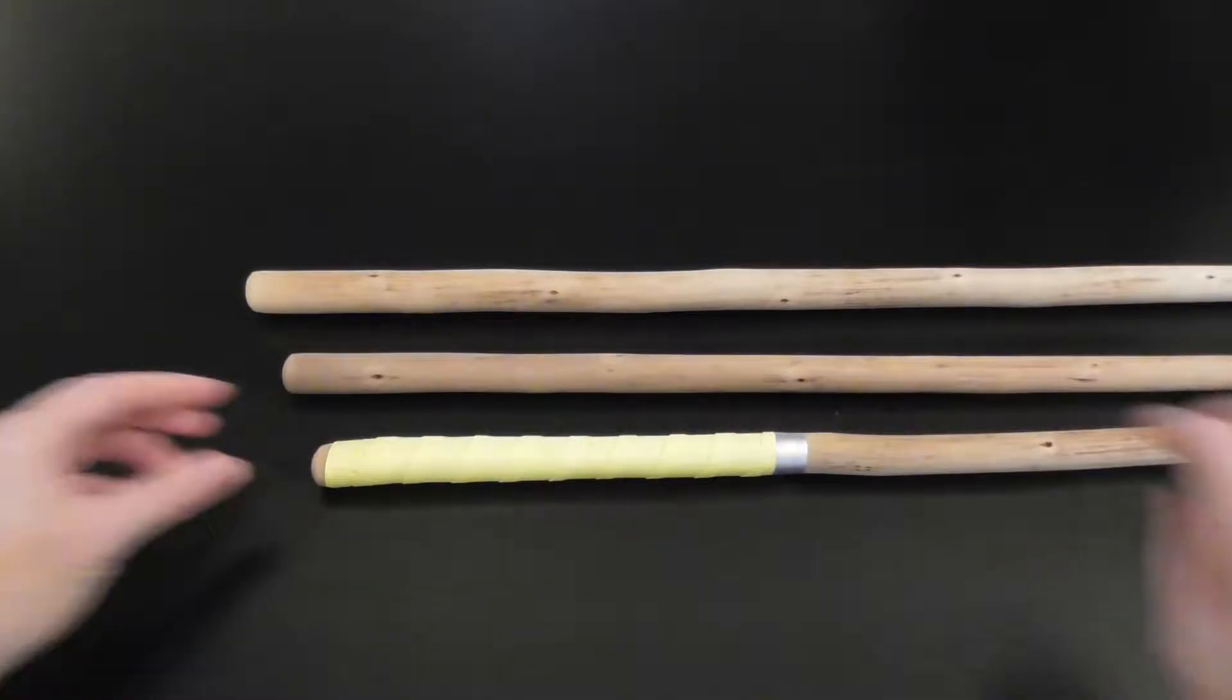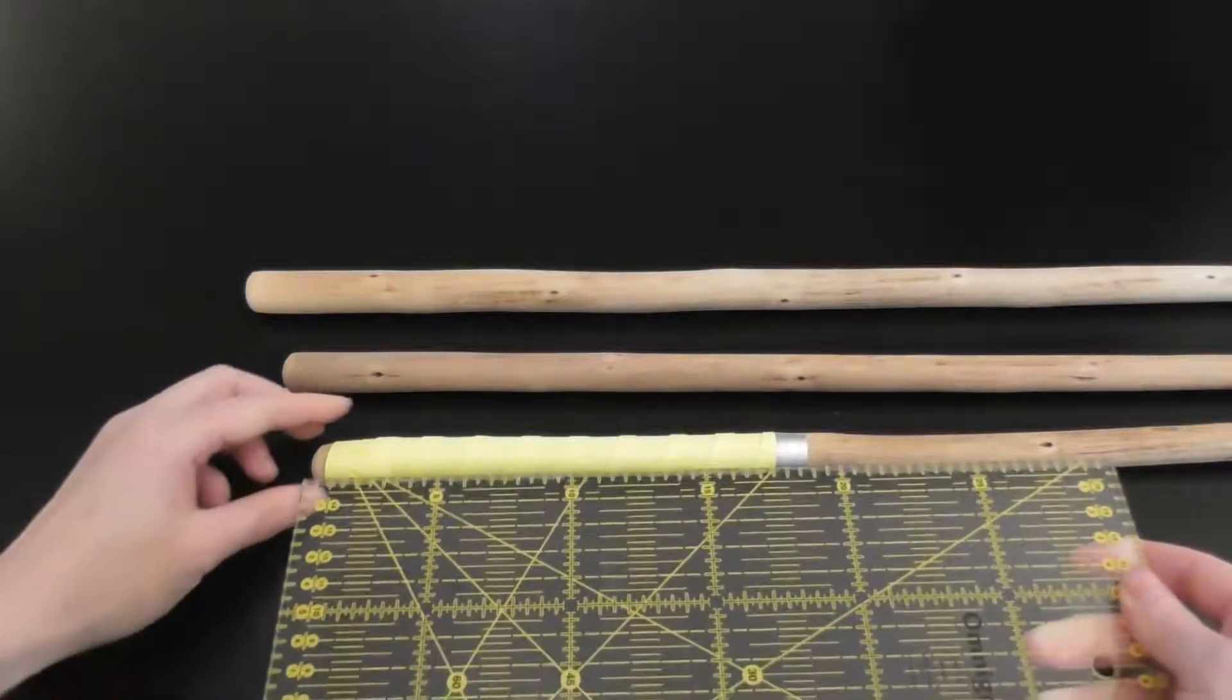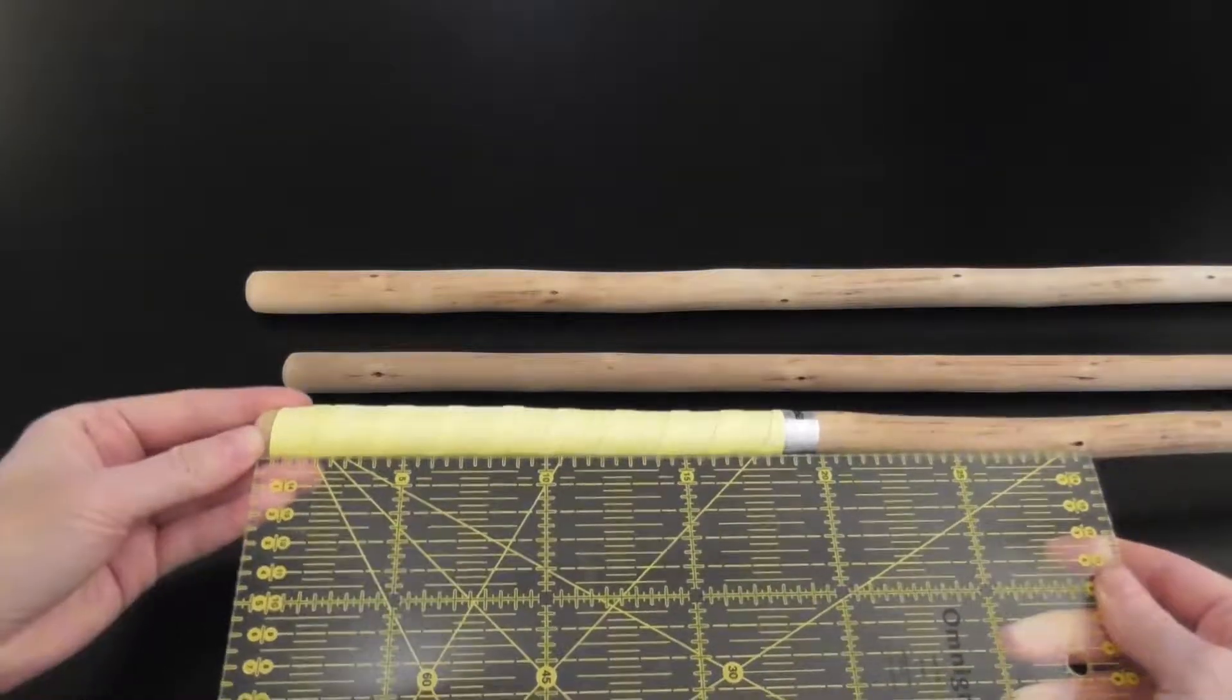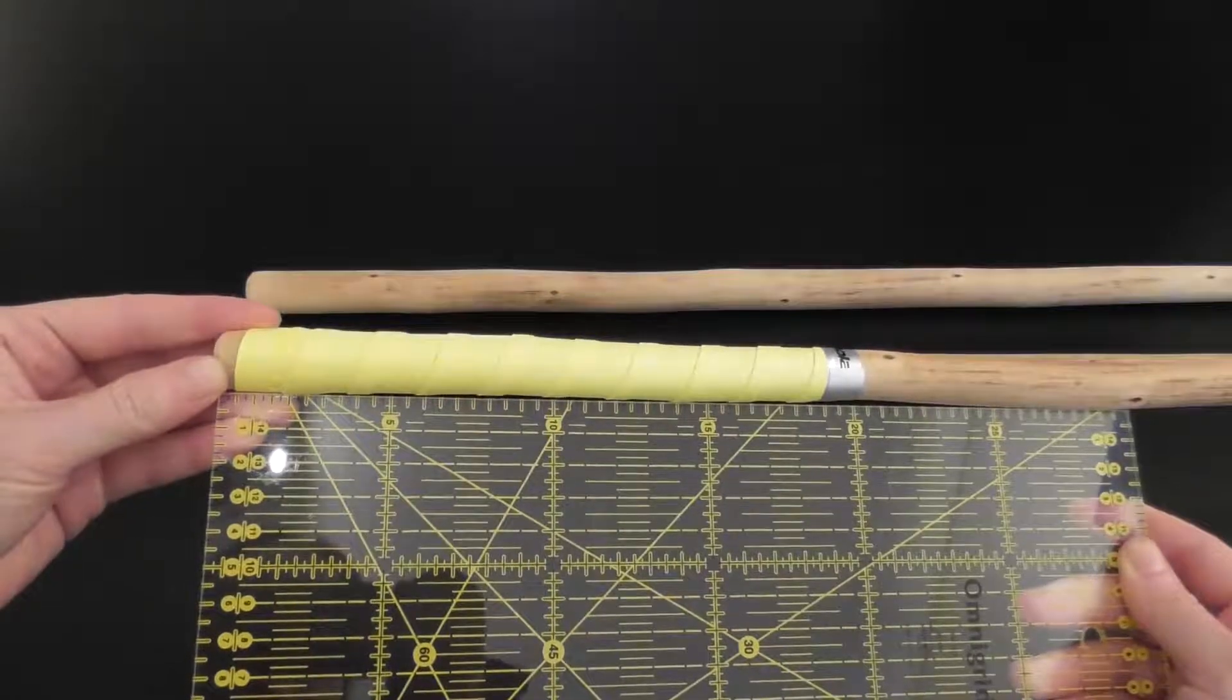Using a taped cane in competition is allowed, however, the tape should not exceed the grip area which is defined as the lower quarter of the cane, so roughly 24 cm. As you can see here, I normally use less, about 20 cm.